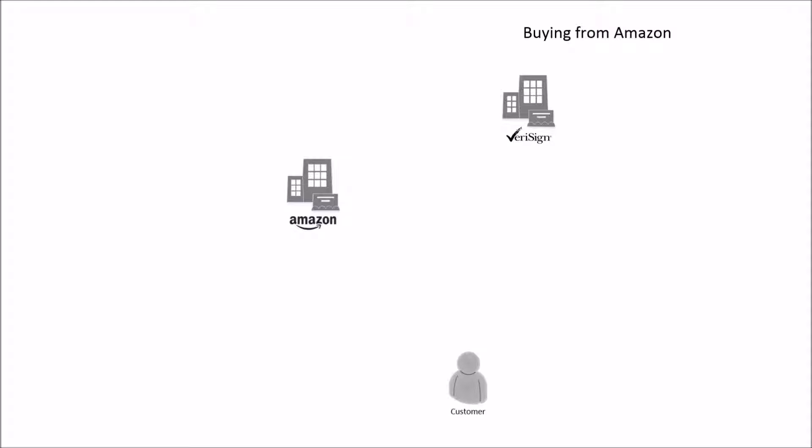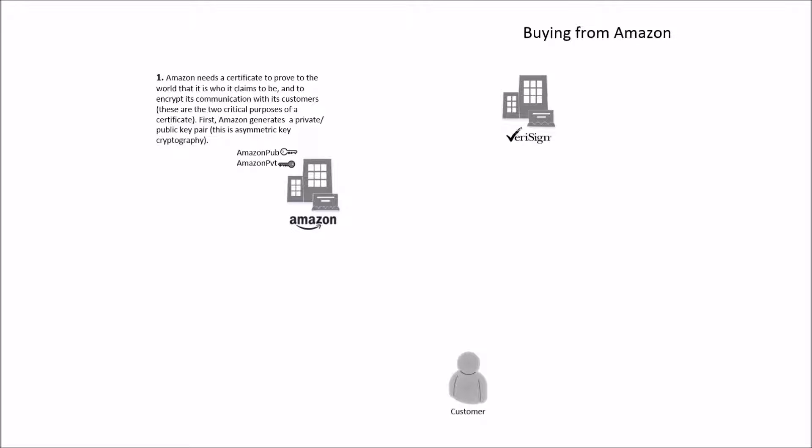Let's jump right into a real-life example. How is someone able to securely buy a book from Amazon? Amazon needs a certificate to prove to the world that it is who it claims to be and to encrypt its communication with its customers. These are the two critical purposes of a certificate. First, Amazon generates a private-public key pair. This is asymmetric key cryptography.